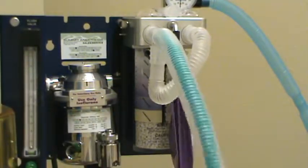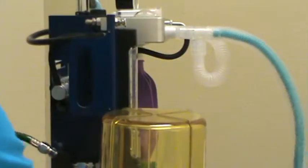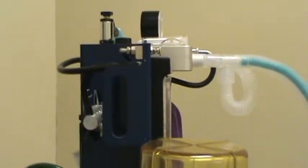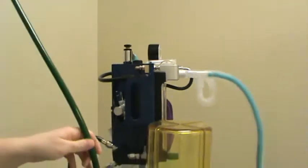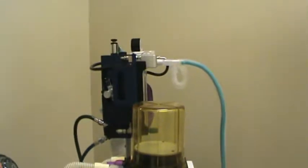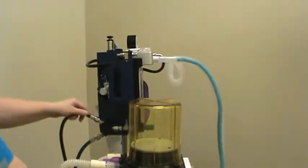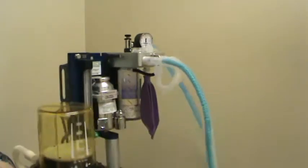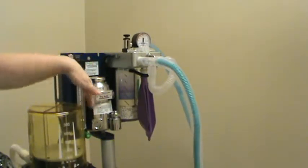Now we're going to trace the source of the oxygen. Our oxygen comes in from right here. It's going to meet the machine here in the back. That's going to go into our flow meter here and raise that oxygen ball up and down when we turn that on.